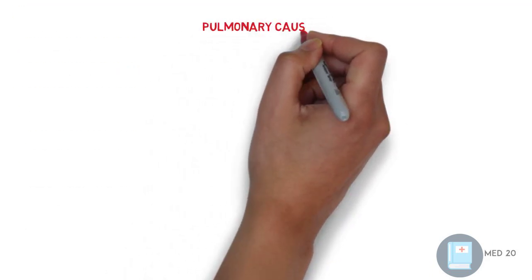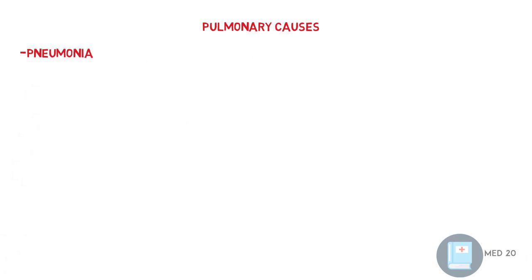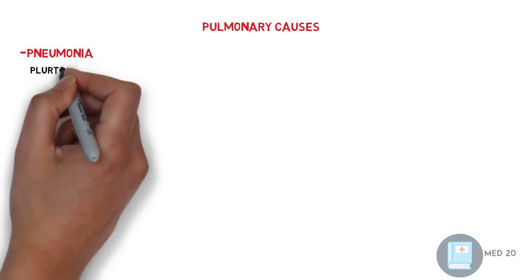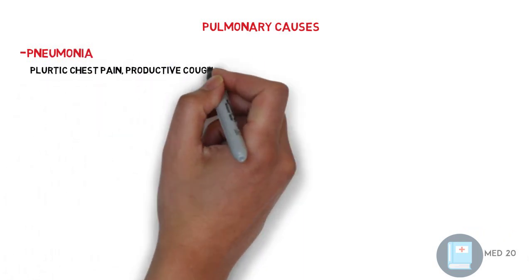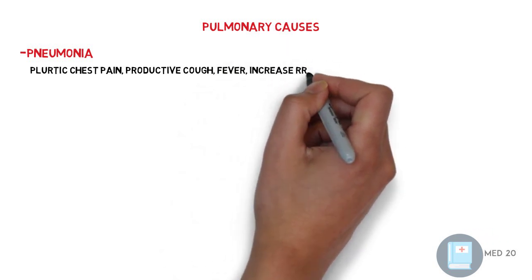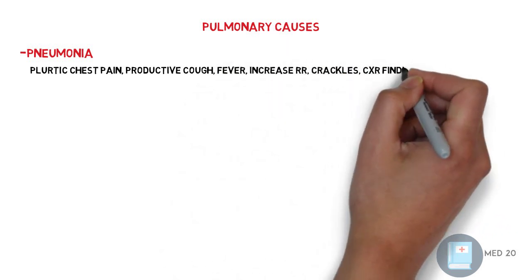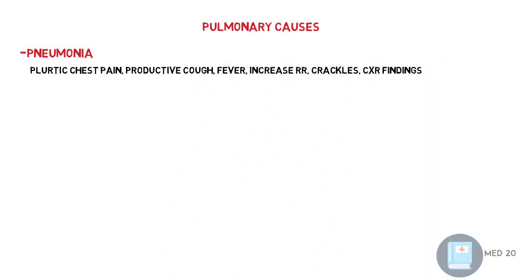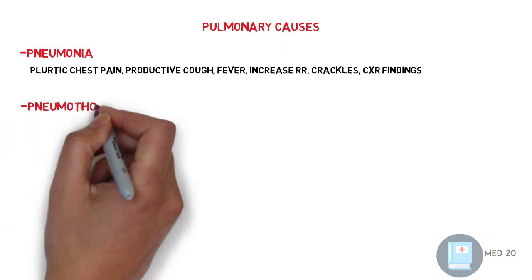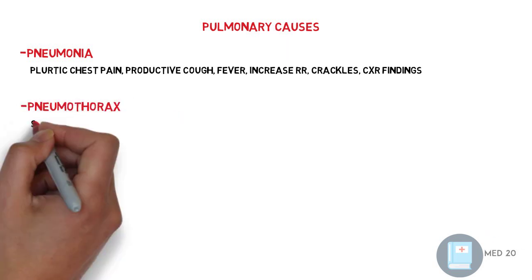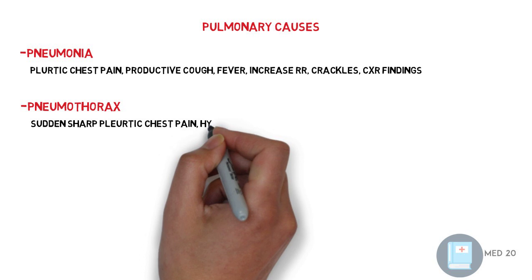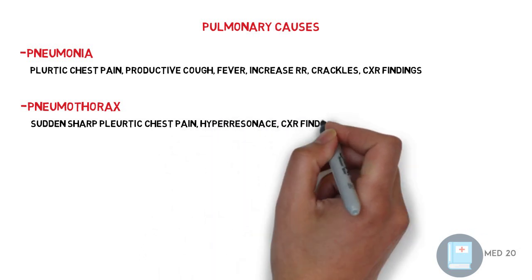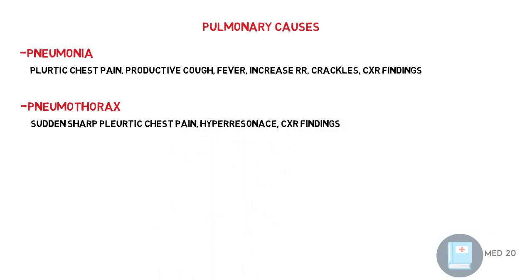Second, pulmonary or respiratory causes. Pneumonia, which is inflammation of the alveoli, comes with pleuritic chest pain, productive cough, fever, increased respiratory rate, crackles, and chest X-ray findings. Pneumothorax, which is sharp, sudden pleuritic chest pain with hyper-resonance on chest examination, and chest X-ray findings that usually appear black.